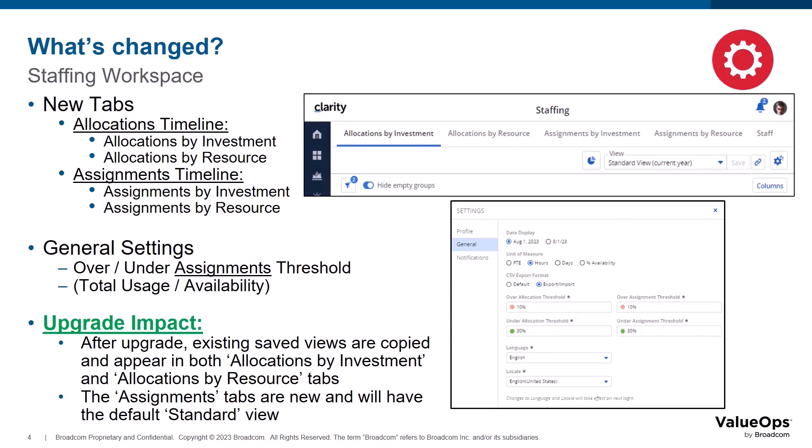We've changed the layout of the staffing workspace in this release. The single allocations timeline from 16.1.2 is now split into two new tabs: allocations by investment and allocations by resource. With the new assignments functionality, two additional tabs provide the same staffing capabilities along with the ability to focus on and edit resources' task assignment ETC values. Within the user's general settings page, over-under thresholds can be set differently for the allocation pages versus the assignment pages.